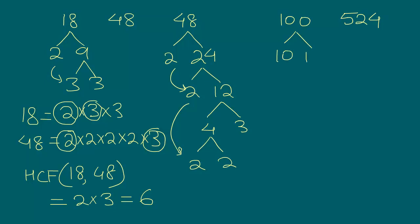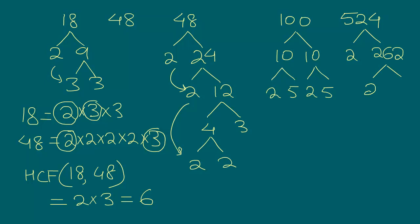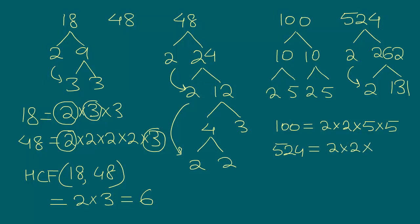So 100 we can write as 10 times 10, and for each 10 we can write it as 2 times 5. So 100 equals 2 times 2 times 5 times 5. Now for 524, we can break this down as 2 times 262, and 262 we can break down as 2 times 131. I believe 131 is a prime number. So 524 equals 2 times 2 times 131.